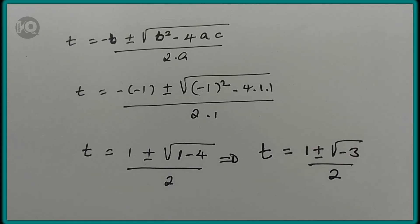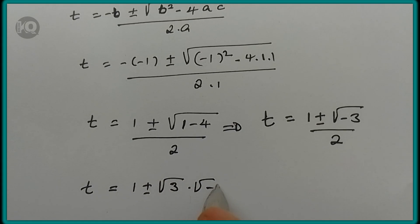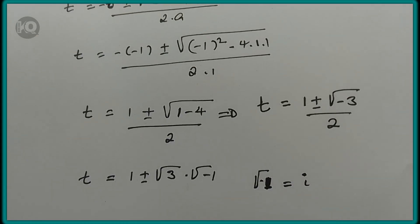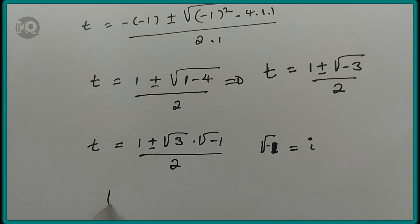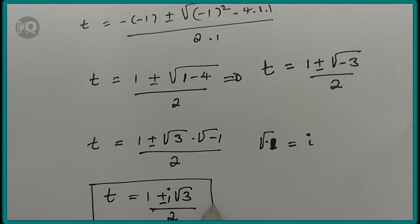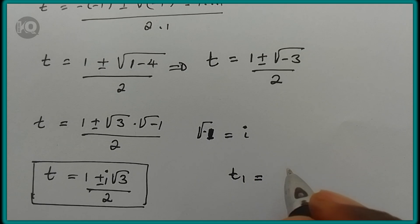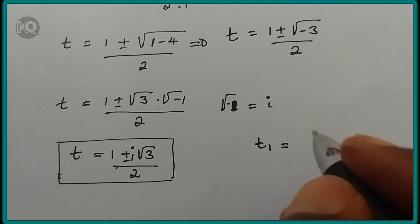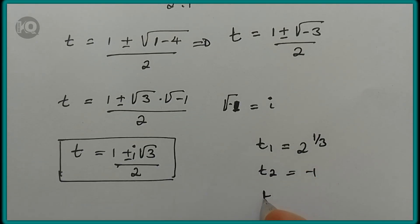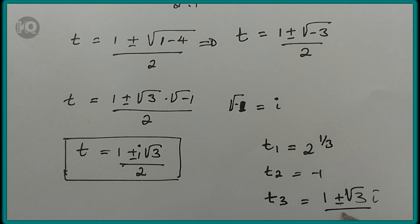This can be written as t equals 1 plus or minus the square root of 3 times the square root of minus 1, over 2. Since the square root of minus 1 equals i, we have t equals 1 plus or minus the square root of 3 times i, divided by 2, which is a complex solution. So our solutions are: t₁ equals 2 to the power of 1 over 3, t₂ equals minus 1, and t₃ equals 1 plus or minus root 3 times i, divided by 2.